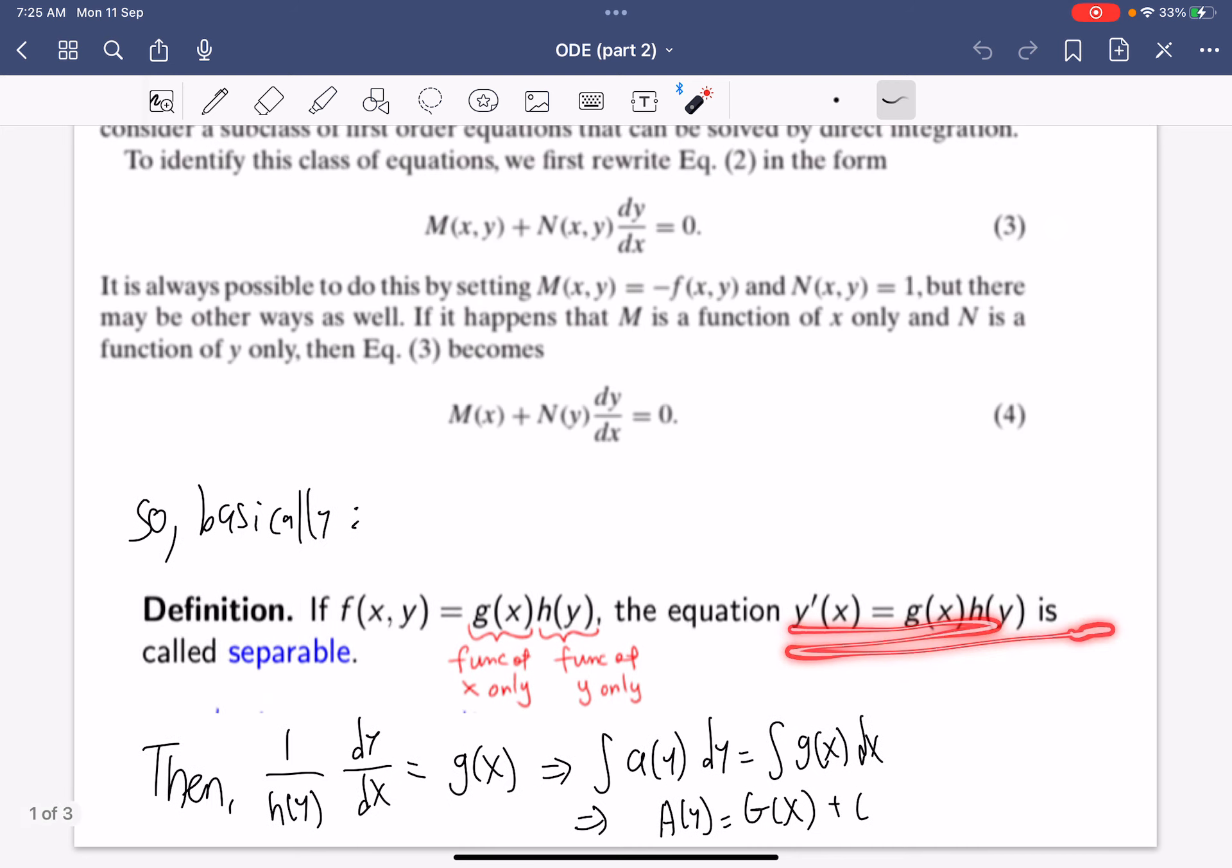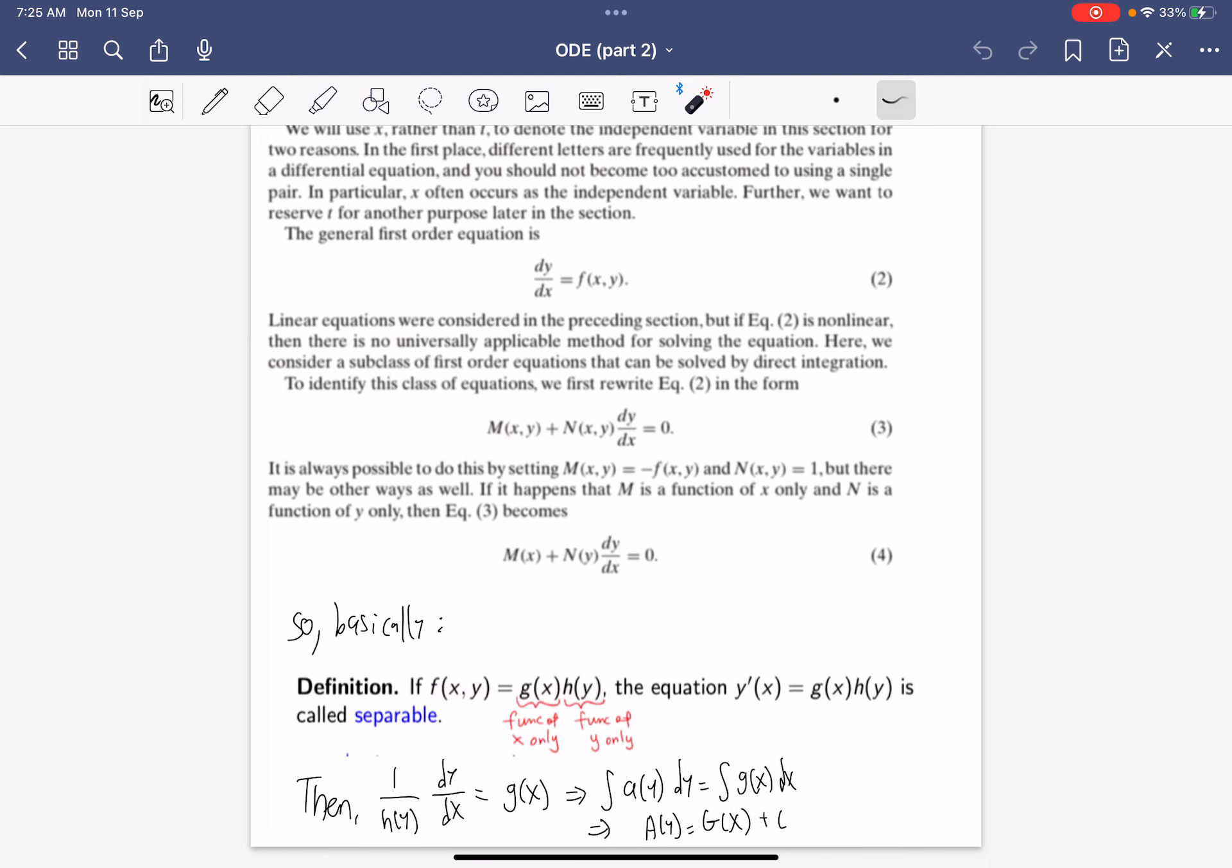The differential equation will look like this and it's called separable because you can take 1 over h(y) times dy/dx equals g(x) and integrate this to get the integral of dy/h(y) equals integral of g(x)dx plus c. You just need to bring this over then divide, so that's what it means to be separable.